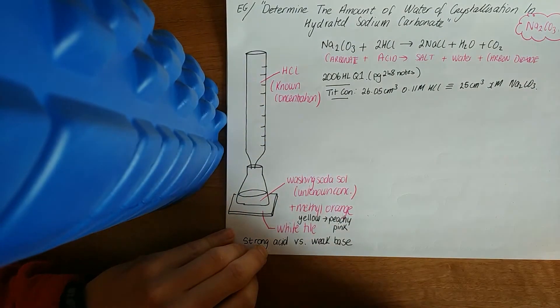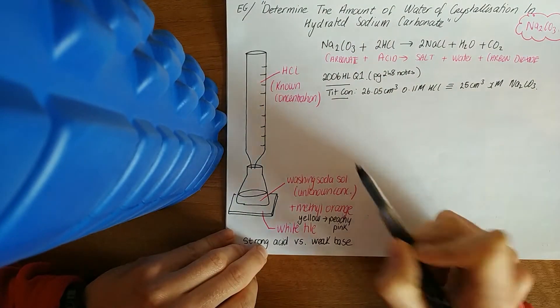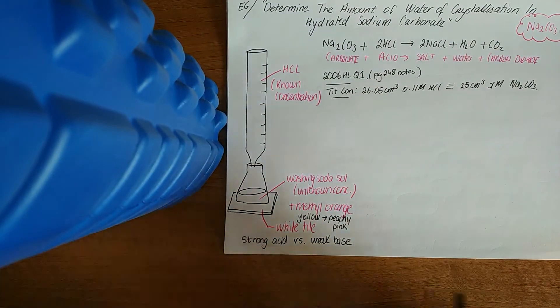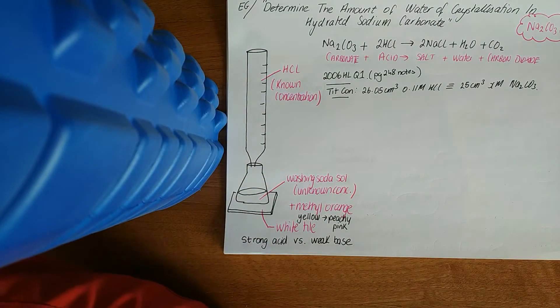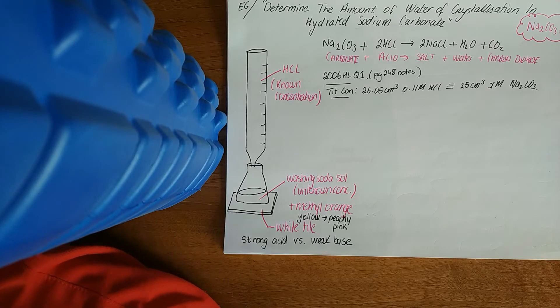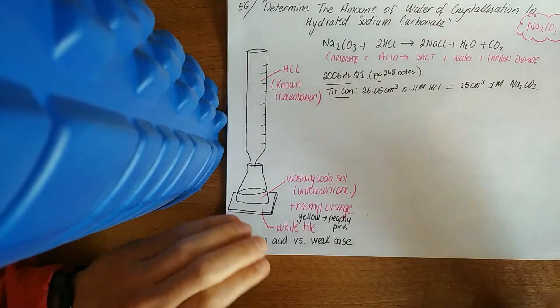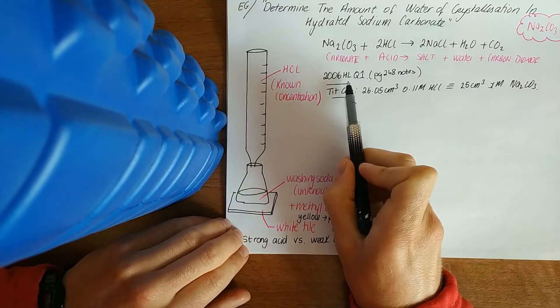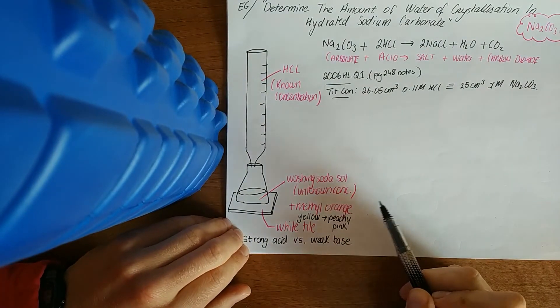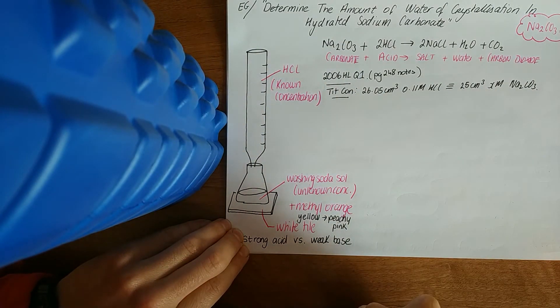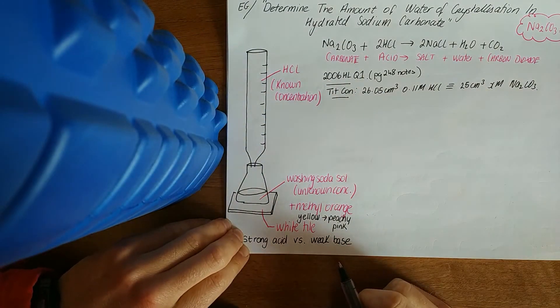You should have a worksheet, maybe 2014 question one. I think it's not teed up as first principles, so there could be a good chance of it being up this year in first principles. I'll do 2006 higher level question one. You can look up examinations.ie, I'll give a link below it.